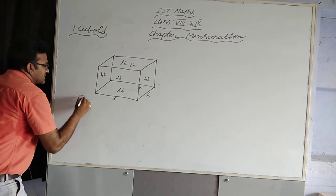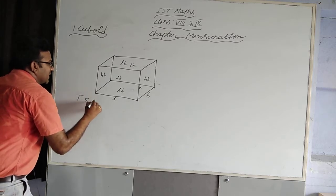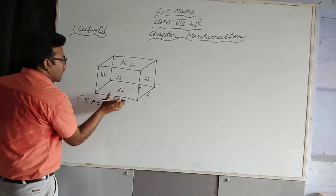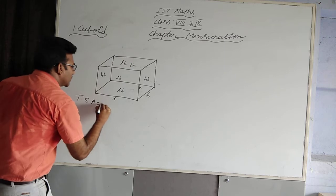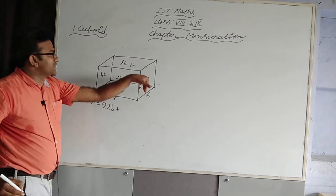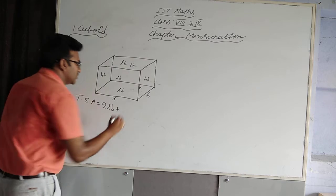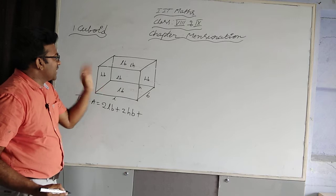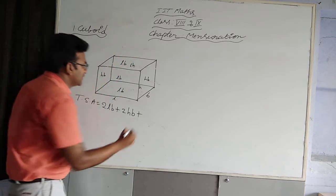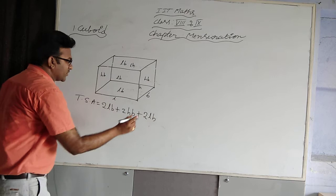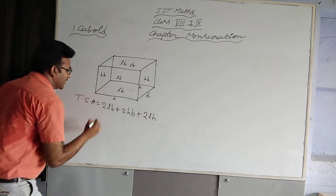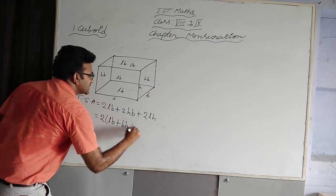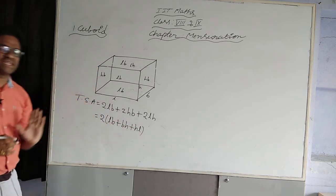Now we are going to take the total surface area — TSA. Bottom plus top is 2LB, side and opposite side is 2HB, front and back is 2LH. So finally, TSA = 2(LB + BH + HL). This is the total surface area.